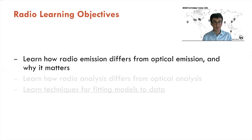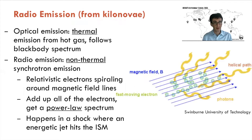How is radio emission different from optical emission and why does it matter? We're going to focus on radio emission from kilonovae — merging neutron stars. Optical emission from kilonovae is thermal; the emission follows hot gas and emits a lot like a blackbody spectrum. But radio emission is non-thermal. In particular, it's usually synchrotron emission, which comes from electrons that are moving very close to the speed of light, spiraling around magnetic field lines.